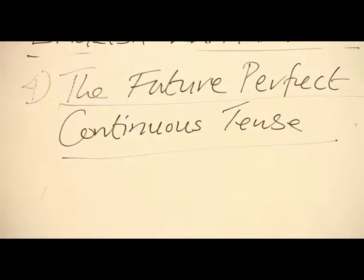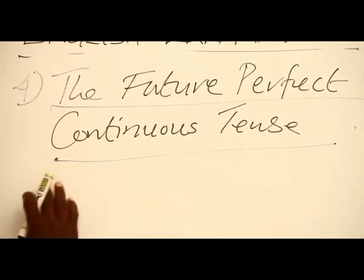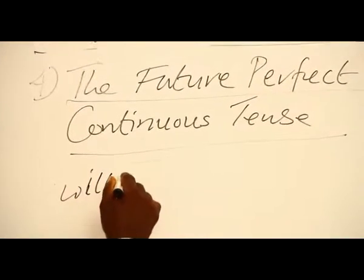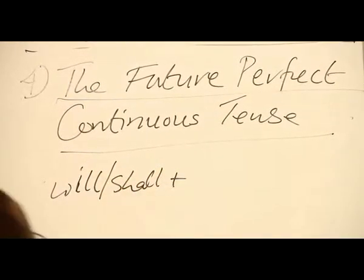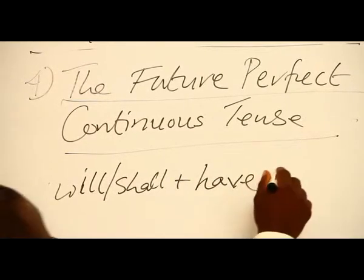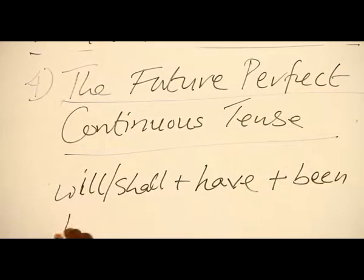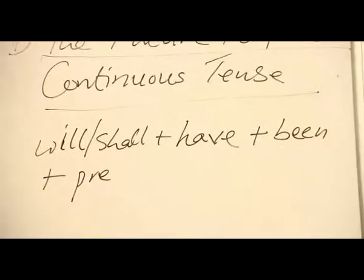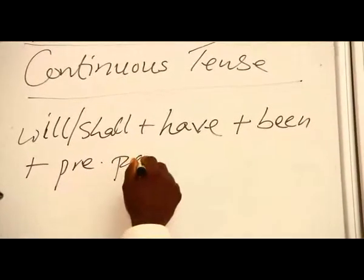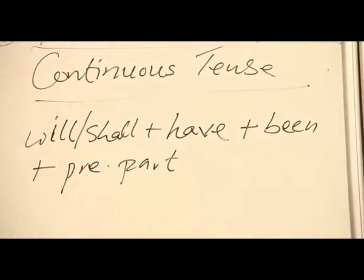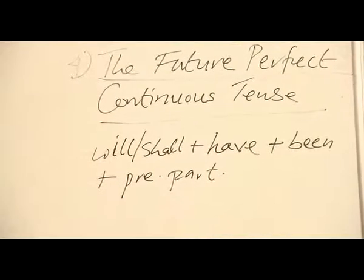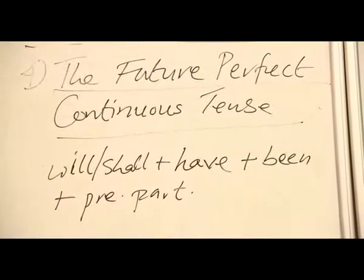The future perfect continuous tense has a structure like all others. The structure is: will or shall, plus have, plus been, plus the present participle of whatever main verb is used. That constitutes the future perfect continuous tense.